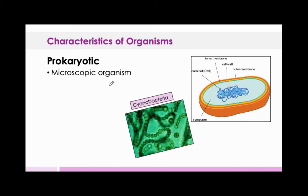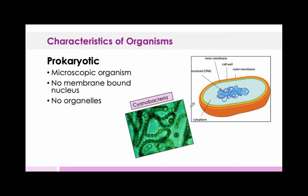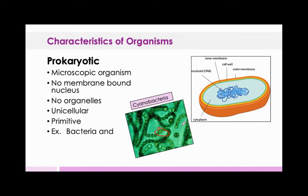Prokaryotic organisms are microscopic and have no membrane-bound nucleus and no organelles. They are basically just a cell membrane with a bunch of DNA in it. They are able to reproduce very rapidly, they are unicellular — even though grouped together, each one is its own organism. They are primitive, meaning very basic and not very complex. Some examples are bacteria and cyanobacteria.